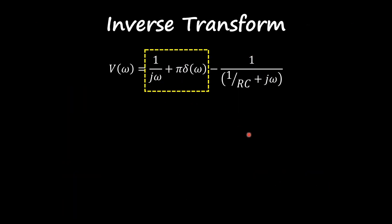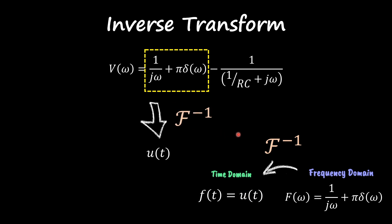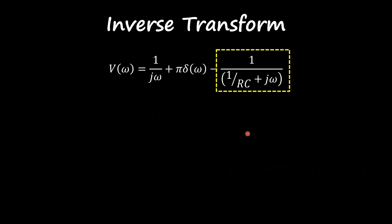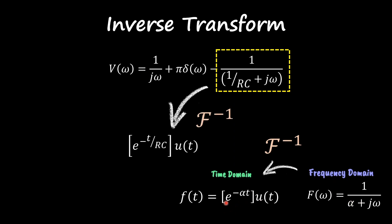This first part over here, we can apply the following transform pair. So this in frequency is going to be equal to a step function. We have our step function, and this part over here is going to be an exponential function, a causal exponential function. So we get that as an answer.